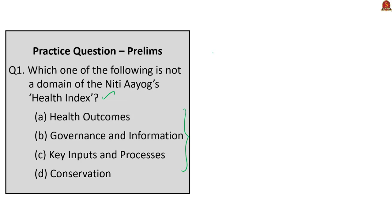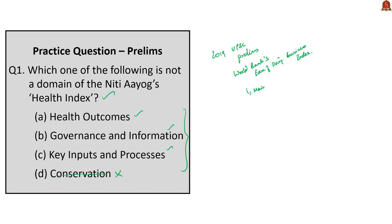If you take this year's prelims question paper, you can find a question like 'which one of the following is not a sub-index of the World Bank's ease of doing business index?' Such questions may come at the examination. There are only three domains with a total of 23 indicators for the health index developed by NITI Aayog. In both editions of the index, the domains were the same: health outcomes, governance and information, and key inputs and processes. So conservation is in no way related to health, and the correct answer is option D, conservation.